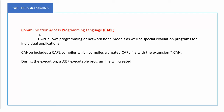What is CAPL programming? CAPL is nothing but Communication Access Programming Language, which is very similar to the C programming language — C is a base for CAPL programming. CAPL allows programming of network node models as well as special evaluation programs for individual applications. When I mention special evaluation programs, those are nothing but test modules.